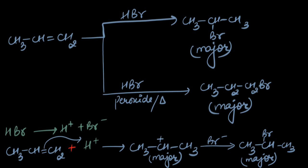In the first case we have carbocation as the intermediate while in the second case we have a free radical as the intermediate.